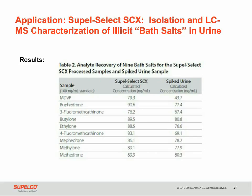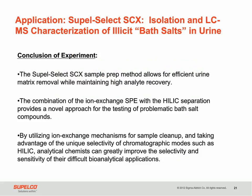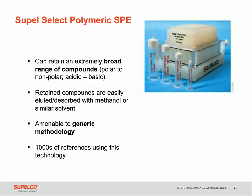Analysis of the clean sample yielded percent recovery of all compounds greater than 75%. This was not the case with the non-cleaned spiked urine — one of the recoveries was as low as 43.7%. The Supelco Select SCX SPE tube allowed for efficient removal of the matrix components of urine and provided high analyte recovery. Polymeric SPE is a valuable addition to your sample preparation methodologies, providing retention of a broad range of analytes from aqueous matrices with little or no method development.